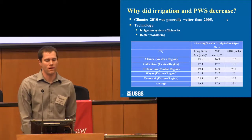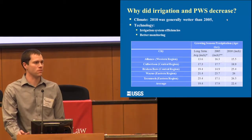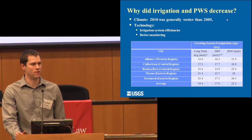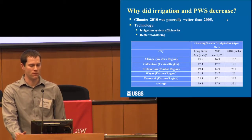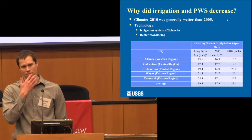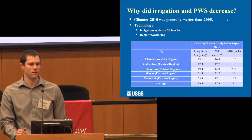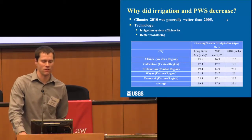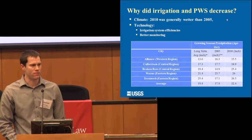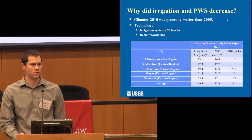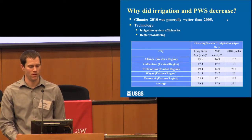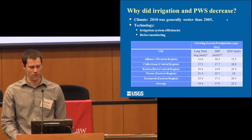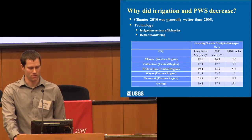Why did irrigation and public water supply decrease from 2005 to 2010? Two main reasons. First, the climate was generally wetter in 2005 — obviously, if we had done this survey in 2012 with our drought, results would have been different. Second, technology: people are still moving from flood irrigation to pivot irrigation, and from pivots to higher efficiency systems, which is another contributing factor.